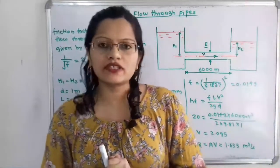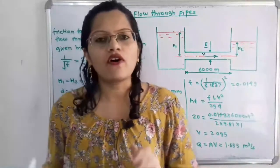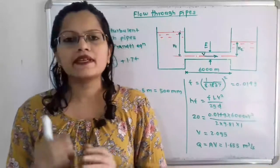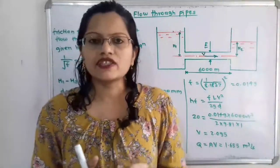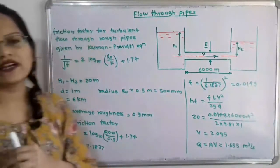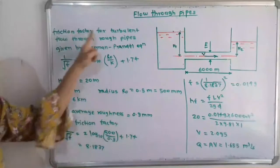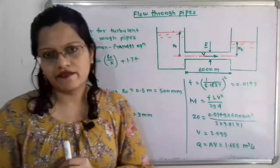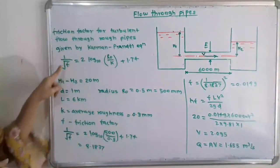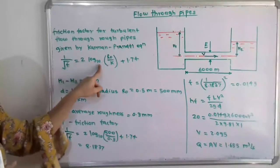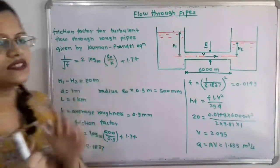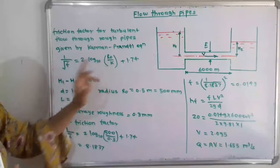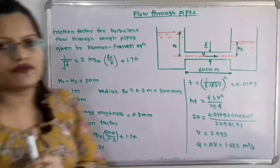The pipe is attached to two reservoirs whose level difference of fluid is also given. The flow through a rough pipe is turbulent flow. The friction factor for turbulent flow through a rough pipe is given by the Karman-Prandtl equation: 1 upon root f equals 2 log base 10 of (R0 / k) plus 1.74, where R0 is the radius, k is the average roughness, and f is the friction factor.